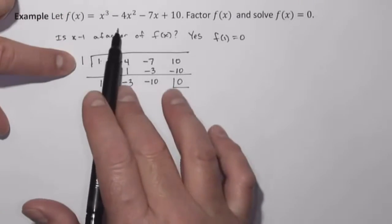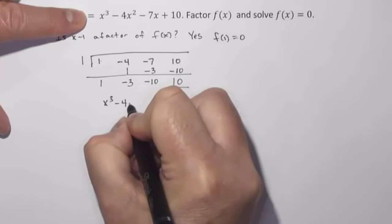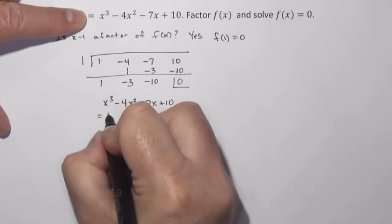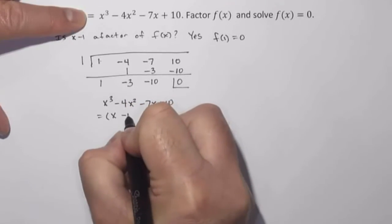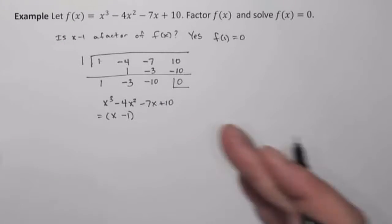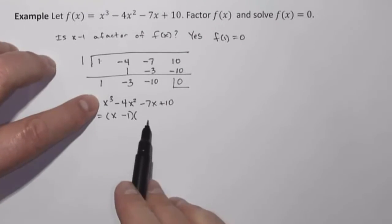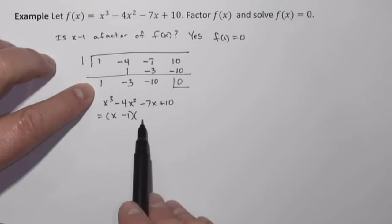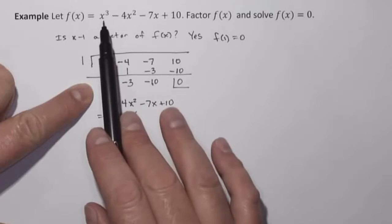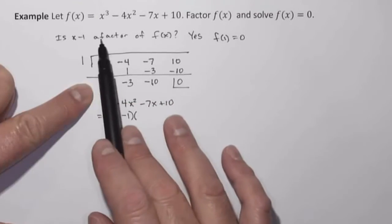So further, that means that our function x cubed minus 4x squared minus 7x plus 10 factors into x minus 1 times something. Now, what does it multiply by in order to equal our original function? So x minus 1 times what? Well, we can get that from these coefficients that are left here. Now, notice we were dividing x cubed and so on by x minus 1.